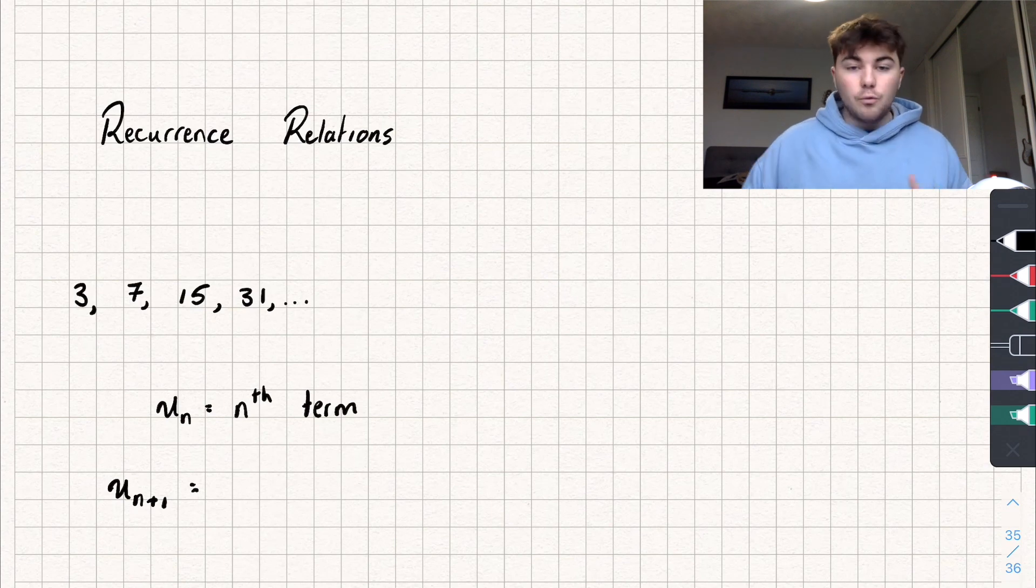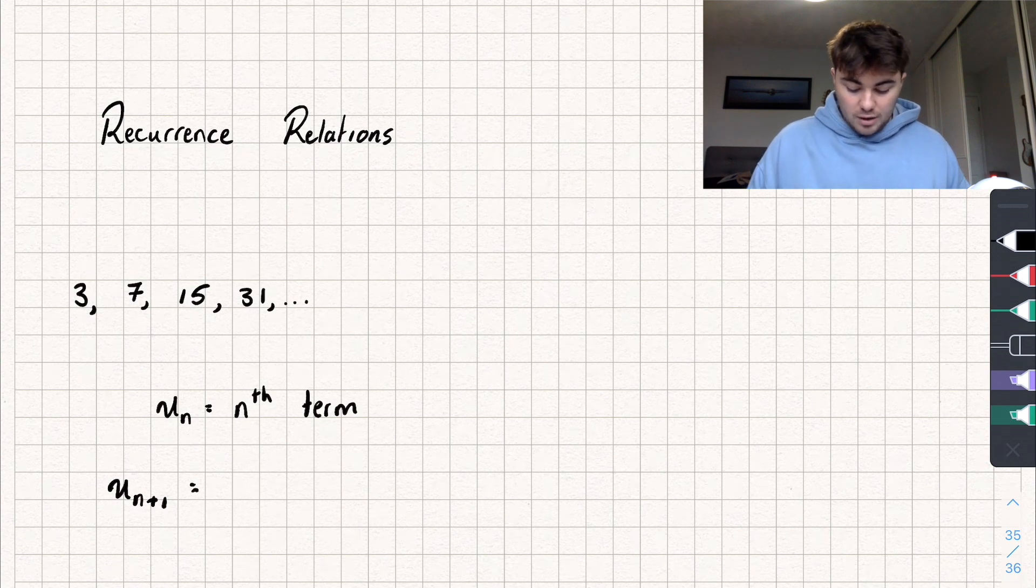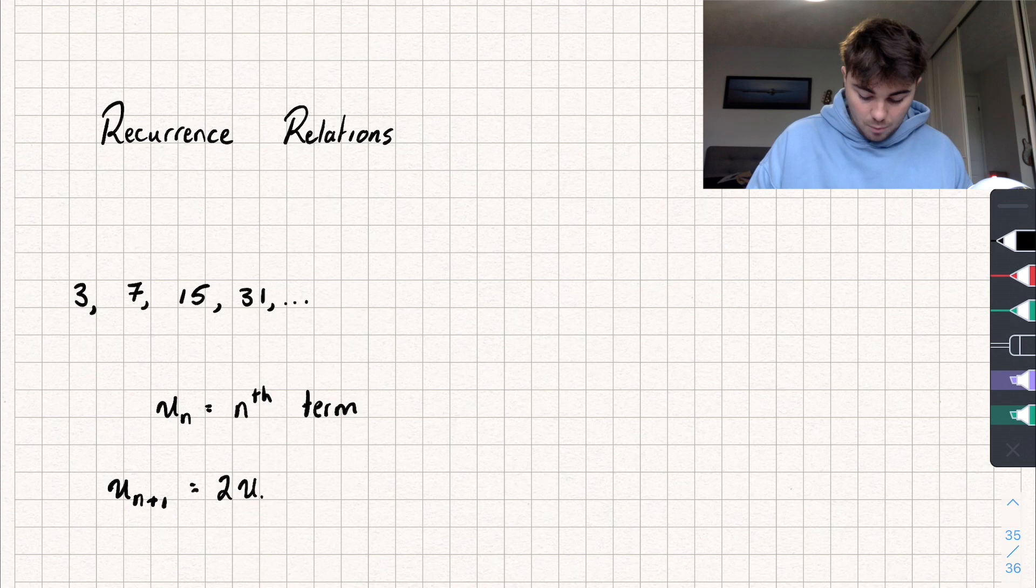So for this sequence above, we said we double the previous term and then add one. So to find the next term, u_{n+1}, it's going to be equal to two times the previous term, which is u_n, and then we plus one.